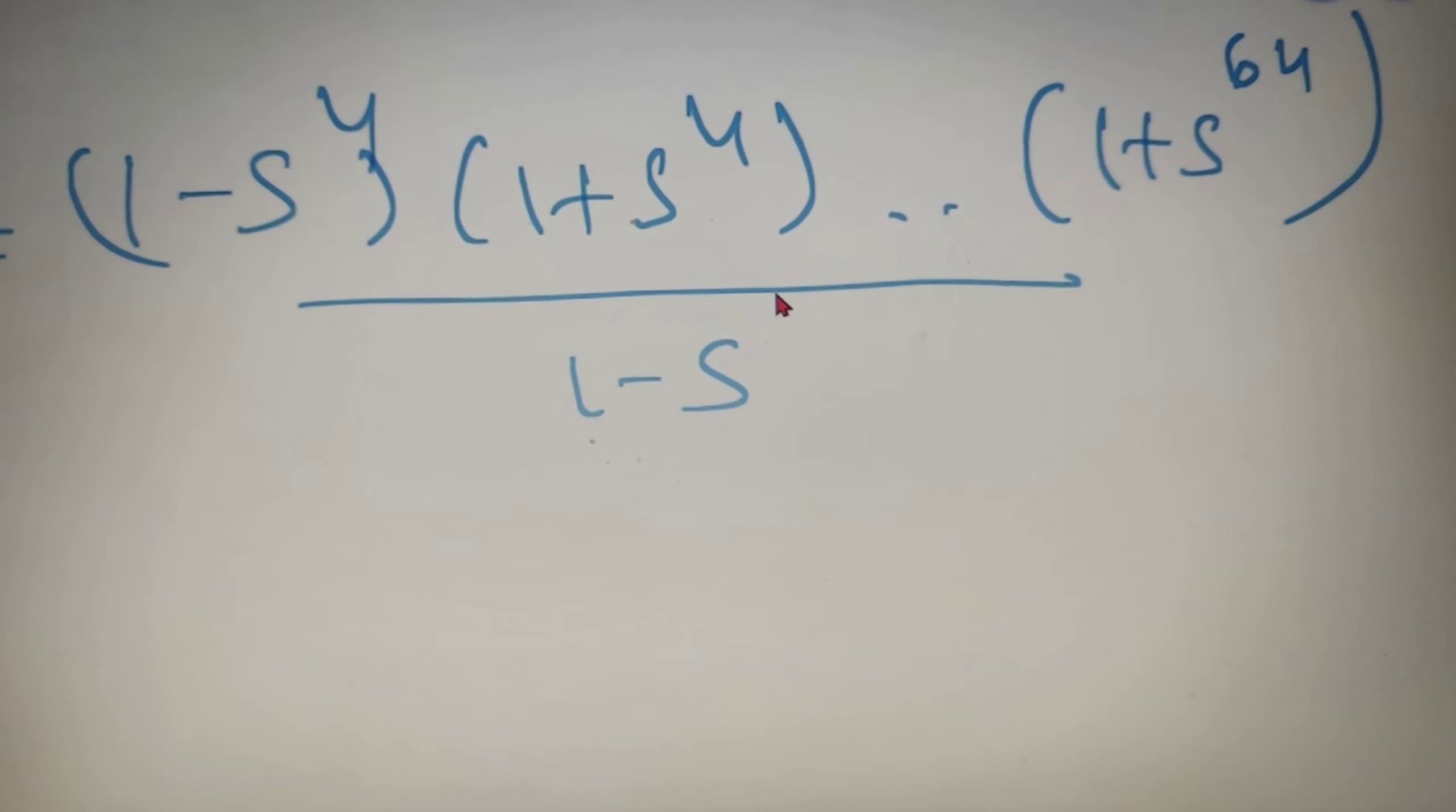I can again see the same pattern: (1 - s⁴)(1 + s⁴) will go on up to s⁶⁴, so I can directly write it as (1 - s⁶⁴)(1 + s⁶⁴) whole divided by (1 - s).